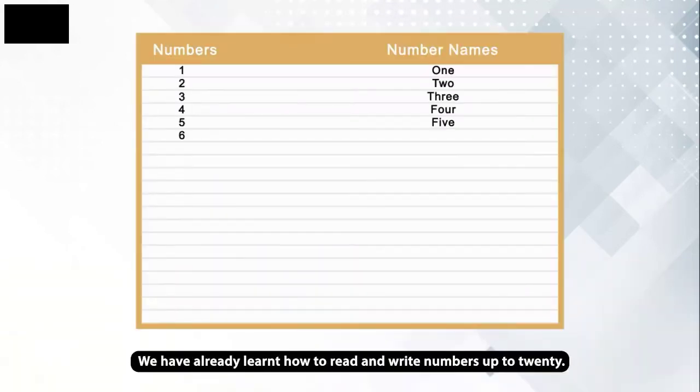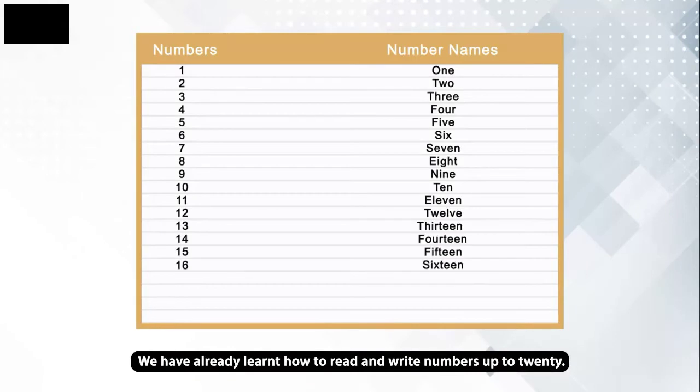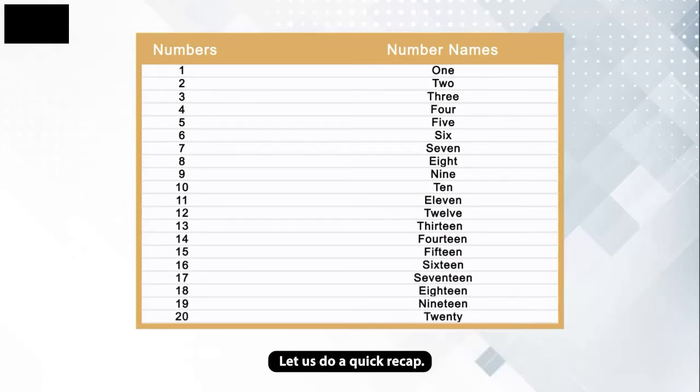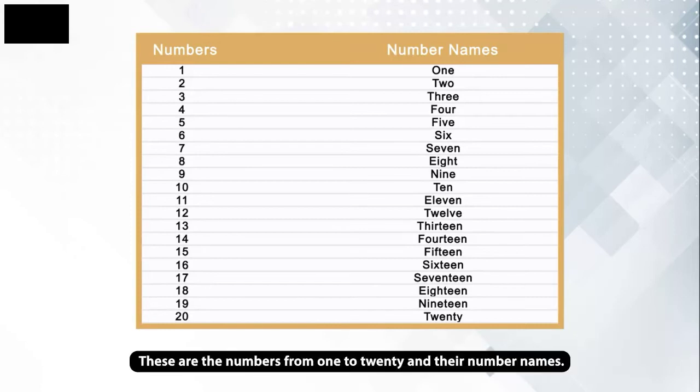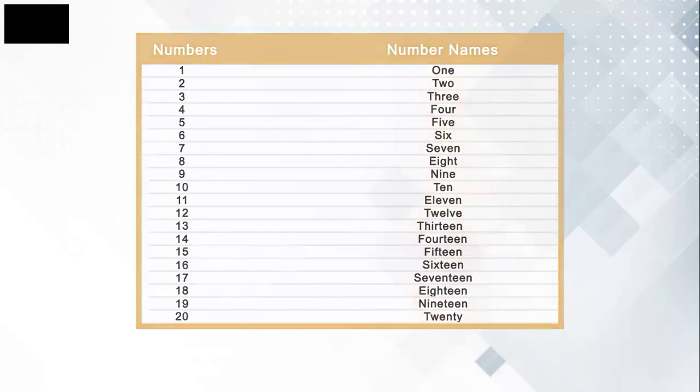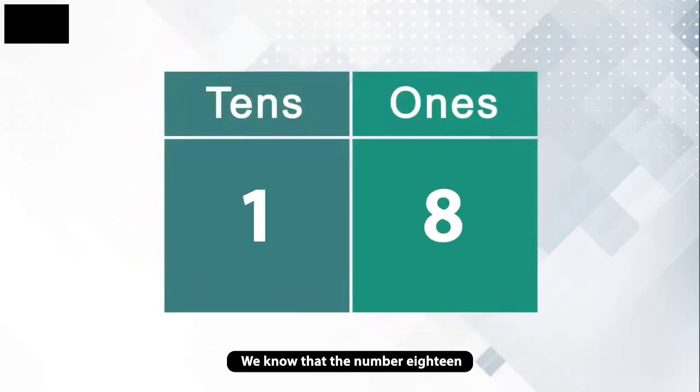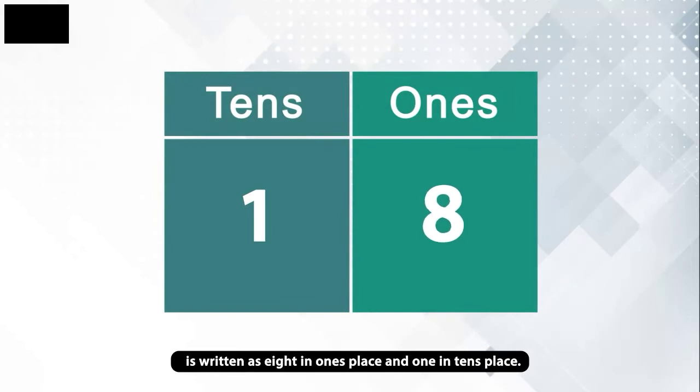We have already learnt how to read and write numbers up to 20. Let us do a quick recap. These are the numbers from 1 to 20 and their number names. We know that the number 18 is written as 8 in the 1's place and 1 in the 10's place.